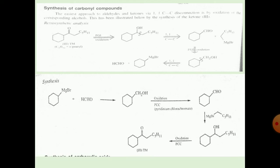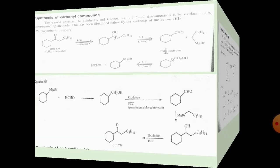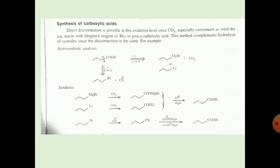Next is the synthesis of a carboxylic acid. First, the ketone or aldehyde is formed. The synthesis of a carboxylic acid involves direct disconnection at the oxidation level, since CO2 — specifically convenient as solid dry ice — can react with a Grignard reagent, or hydrolysis of a cyanide can be used, since the disconnection is the same.